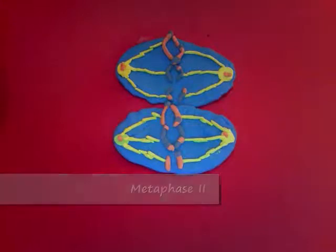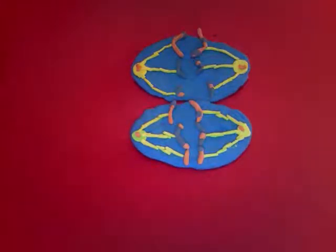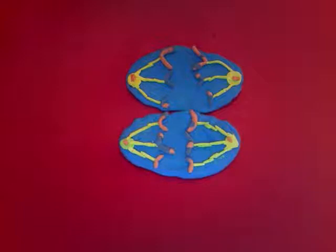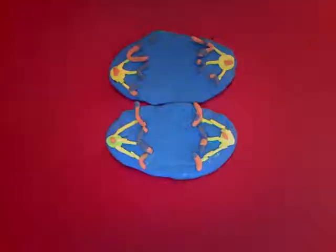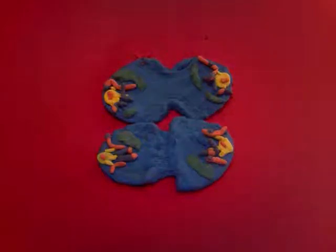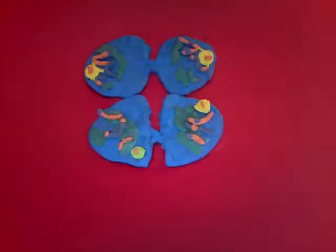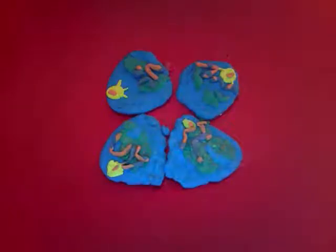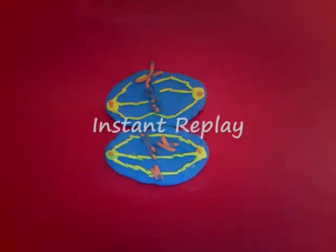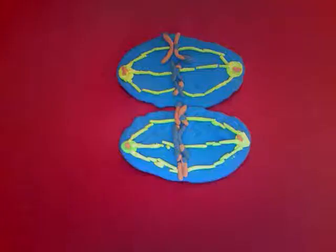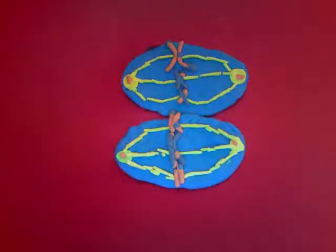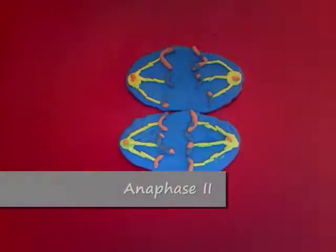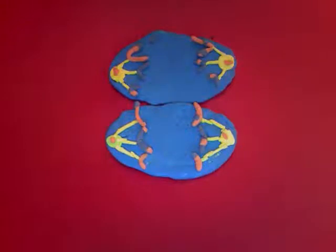Metaphase II begins as the chromosomes are positioned on the metaphasial plate, as in mitosis. The two sister chromatids of each chromosome are not genetically identical because of meiosis I. Again, the kinetochores of sister chromatids are attached to microtubules extending from opposite poles. Anaphase II begins with a breakdown of proteins holding sister chromatids together at the centromere, which allows the sister chromatids to separate.